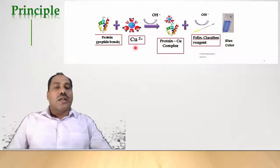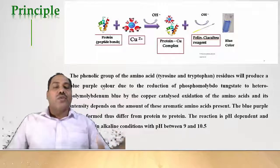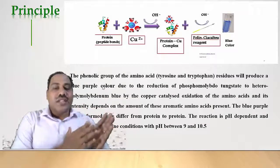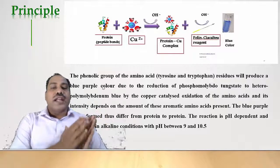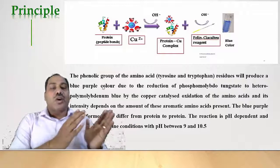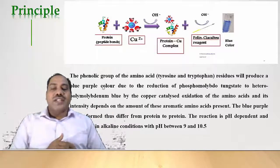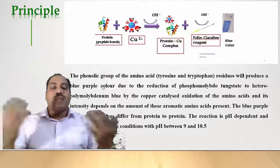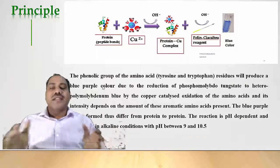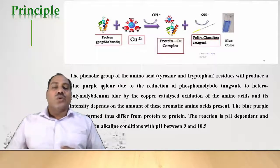The protein peptide bonds react with copper ions present in the reagents to form protein-copper complexes. These complexes then react with the Folin-Ciocalteau reagent to form a blue color product. The phenolic groups of amino acids, particularly tyrosine and tryptophan residues, produce the blue color due to the reduction of phosphomolybdotungstate to heteropolymolybdenum blue by copper-catalyzed oxidation. The intensity depends on the amount of aromatic amino acids present, and the overall reaction is pH-dependent, working best in alkaline conditions at pH 9 to 10.5.